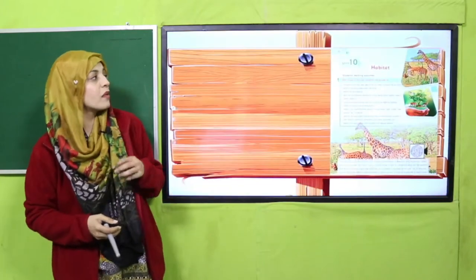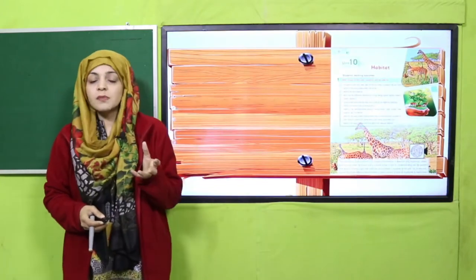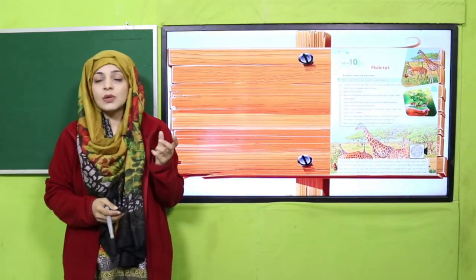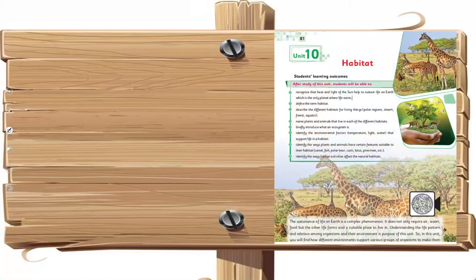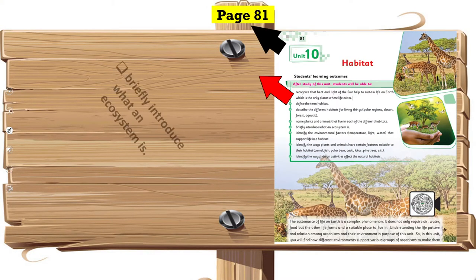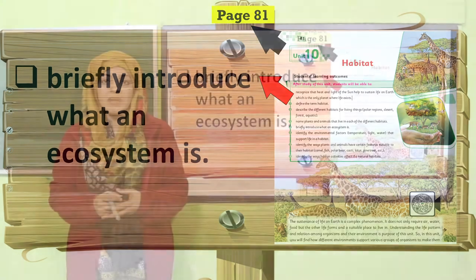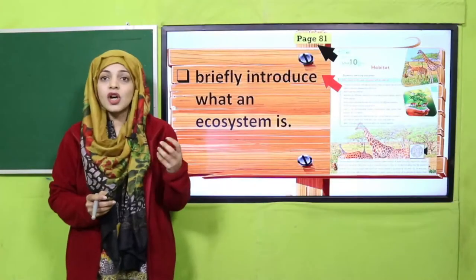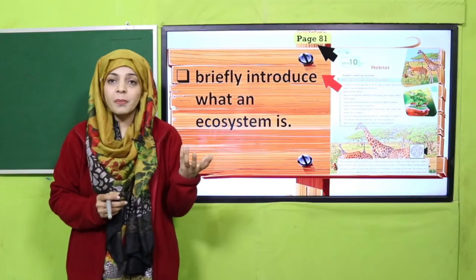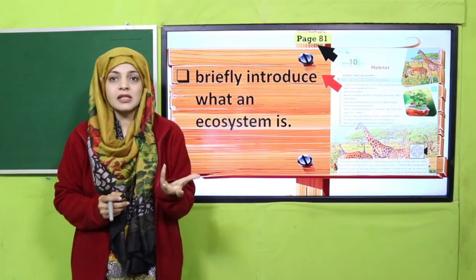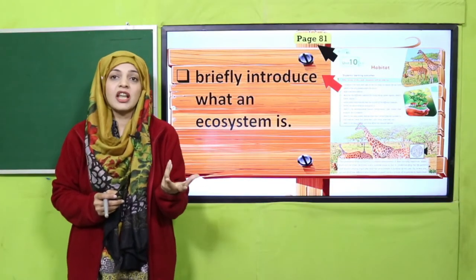We will move towards page number 81 where the objectives are given. Today's objective is to briefly introduce what an ecosystem is and understand how an ecosystem is formed.